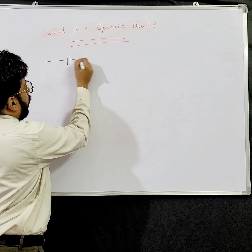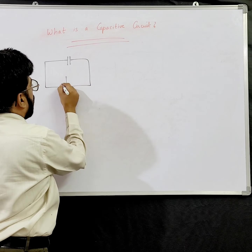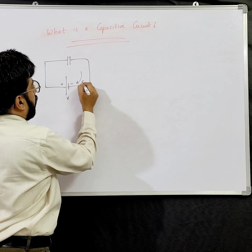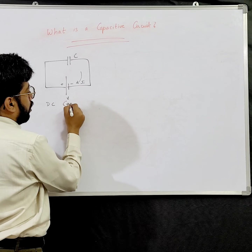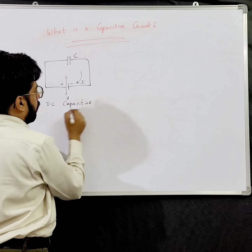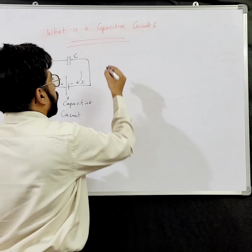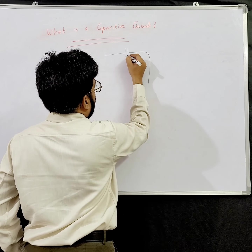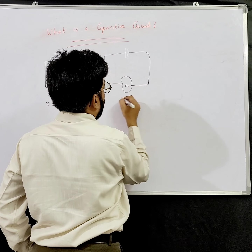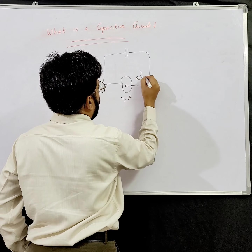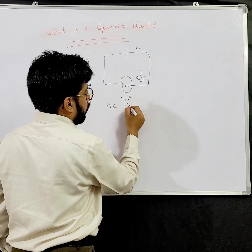If I connect a capacitor to a DC supply, then this is called a DC capacitive circuit. Similarly, if I connect a capacitor to an AC supply, then it is called an AC capacitive circuit.